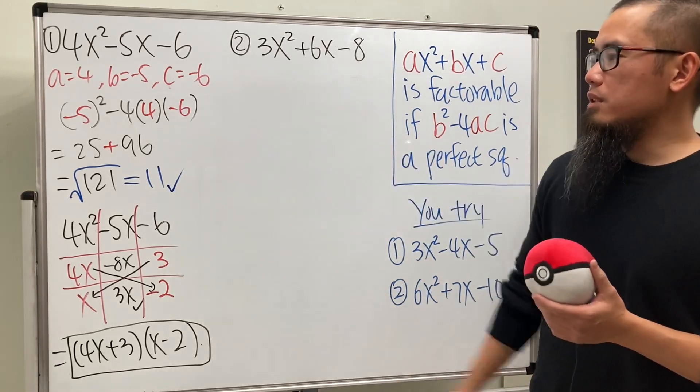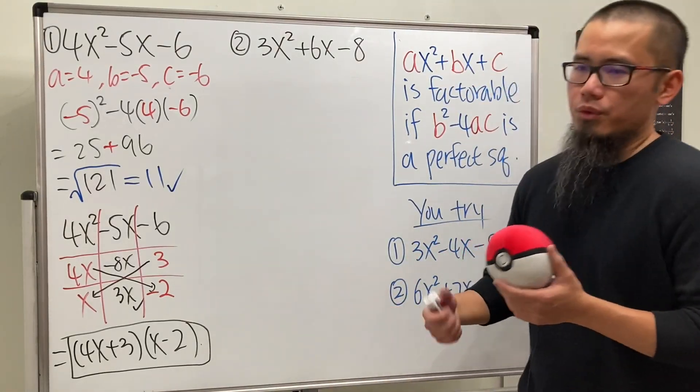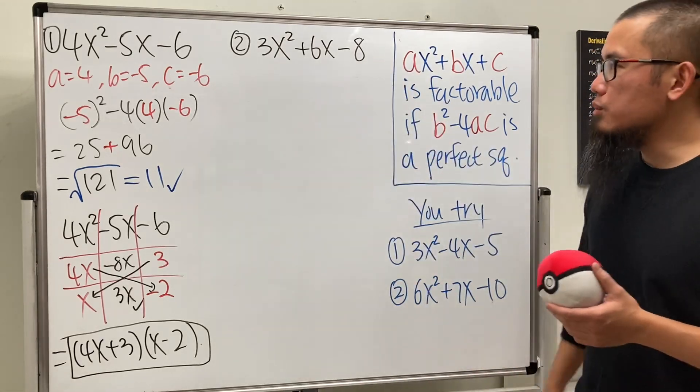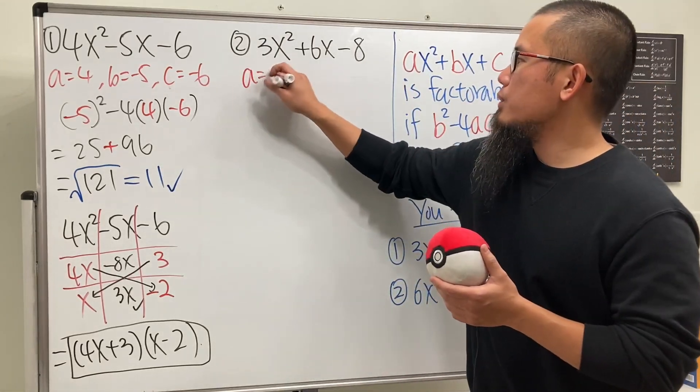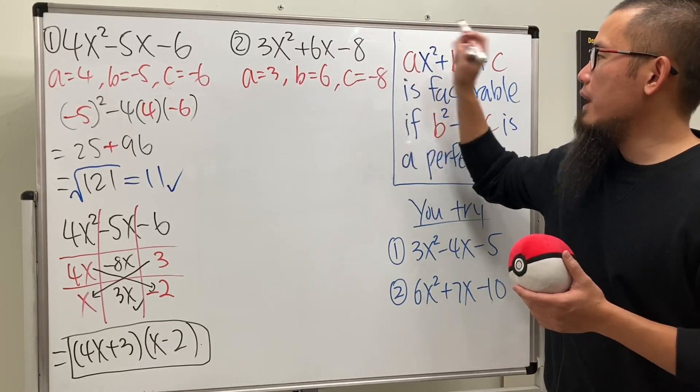So of course, once you know it's factorable, try it. Especially if the number is really big, then if you know it's not factorable, don't even have to try. Let's take a look at this one. So of course, a is equal to 3, b is equal to 6, this is the b, this is the 6, and then c is equal to negative 8.